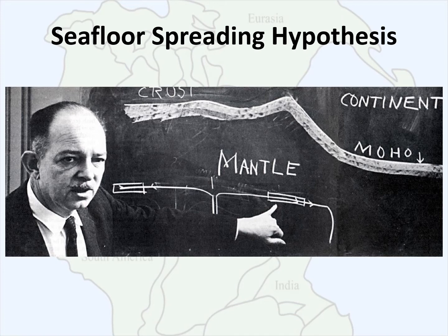In the 1950s, aside from the work of Heezen and Tharp, there was the work of Harry Hess — a naval officer and an oceanographer that served during World War II. Post-World War II, he did several submarine voyages to the East Pacific Rise. While Tharp and Heezen focused on the Mid-Atlantic Ridge, Harry Hess was looking at the East Pacific Rise, and his work along with other oceanographers developed a hypothesis known as seafloor spreading.